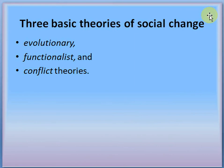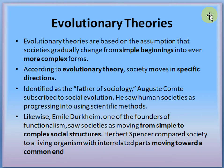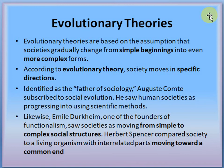There are three basic theories of social change: evolutionary theory, functionalist theory, and conflict theory. What is evolutionary theory? Evolutionary theories are based on the assumption that societies gradually change from simple beginnings to even more complex forms. Society changes from a simple to a complex form gradually.